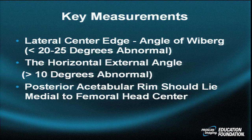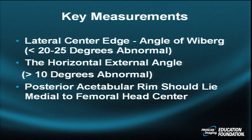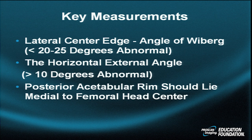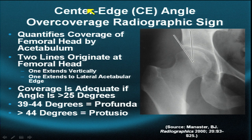Some of the key measurements you'll hear about are: the lateral center edge angle of Weiberg or Weber, which is normally greater than 20 to 25 degrees; the horizontal external angle, which is usually less than 10 degrees (which we'll ignore today); and the posterior acetabular rim, which should lie medial to the center of the femoral head in an axial projection. One such measurement is the center edge angle of Weiberg or Weber.